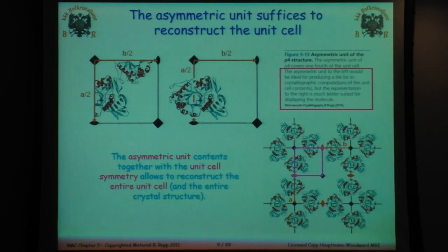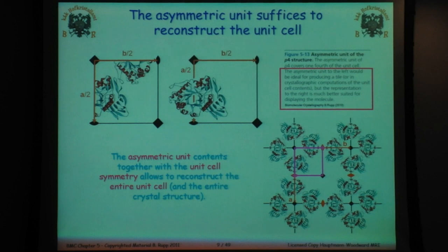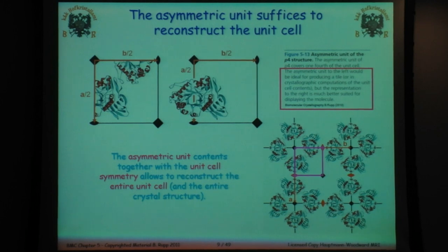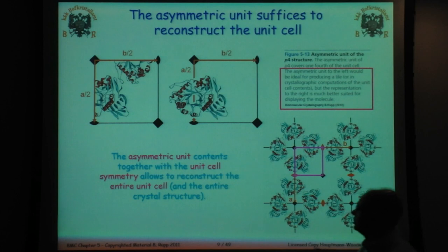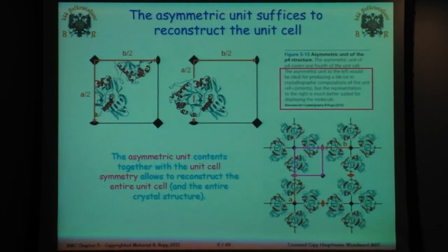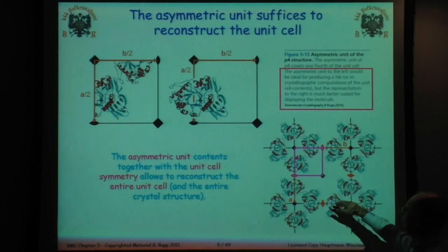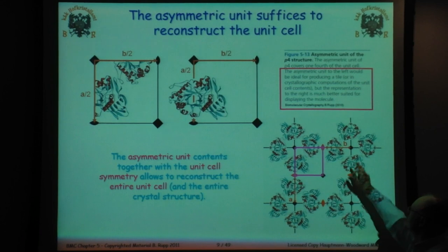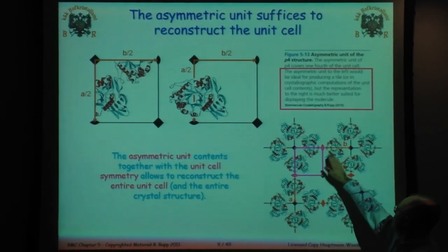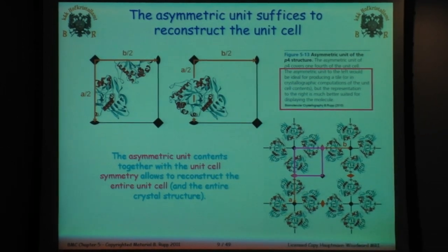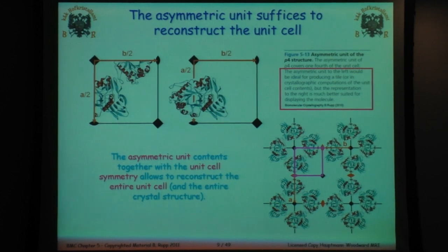The asymmetric unit is the unique part that, once replicated by doing translations, actually generates the crystal symmetry. The unit cell is the description of the cell that the asymmetric unit sits in. Once you put the symmetry in, you can reconstruct the entire unit cell and crystal structure. In this particular case, the asymmetric unit is one-fourth of this structure. When you do the four-fold translation you generate the other parts, and with the two-fold symmetry elements you generate the rest. You're essentially building up the unique part of the protein and by applying the symmetry, you get information on what's in the crystal.